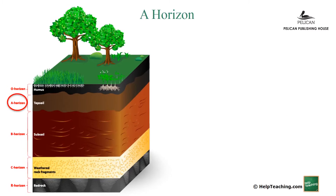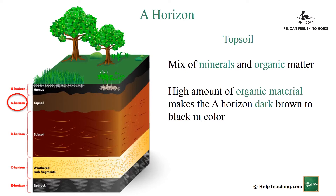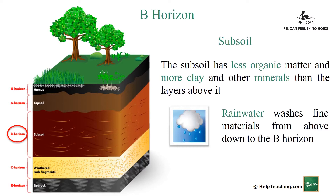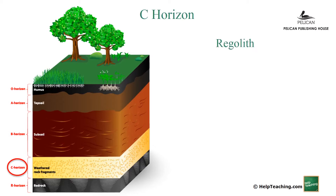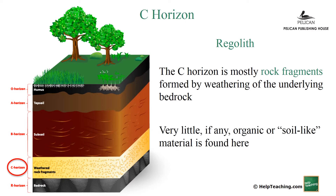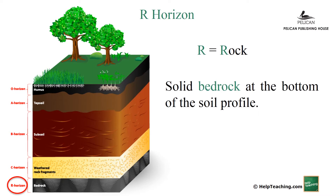The topsoil, denoted by the letter A, is a thin layer containing organic matter and minerals — this is the main layer where plants and organisms live. The subsoil, denoted by B, contains clay, iron, and organic matter. The parent material or rock, denoted by C, is the layer from which all the above layers developed; it is made up of weathered or decomposed rock.